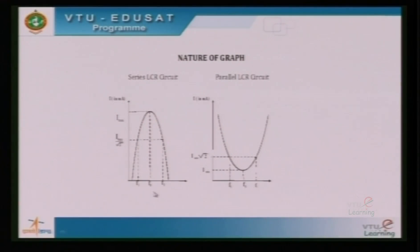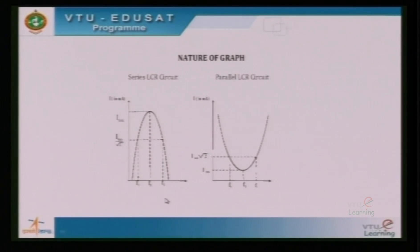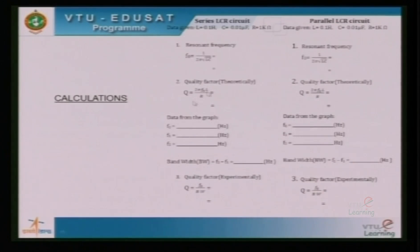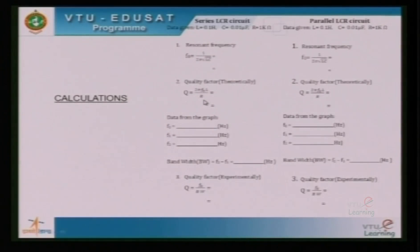From the graph, note down the bandwidth of this particular circuit in which the chosen value of L is 0.1 Henry and C is 0.01 microfarad. Note the bandwidth, note the resonant frequency, and calculate the quality factor using the relation F₀ divided by bandwidth. Theoretically, it is also given by 2πF₀L/R. Here, the role of the resistor comes into picture — the value of R decides the shape of the resonance curve.